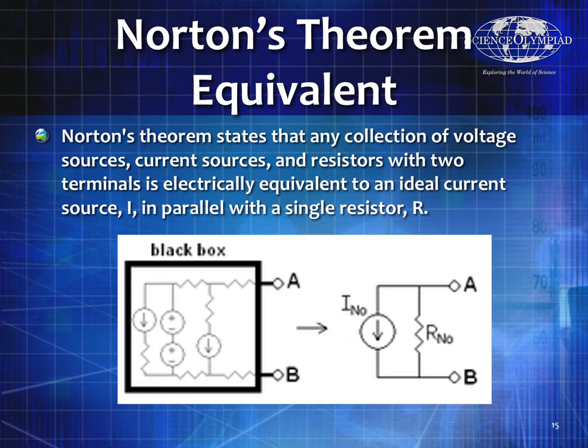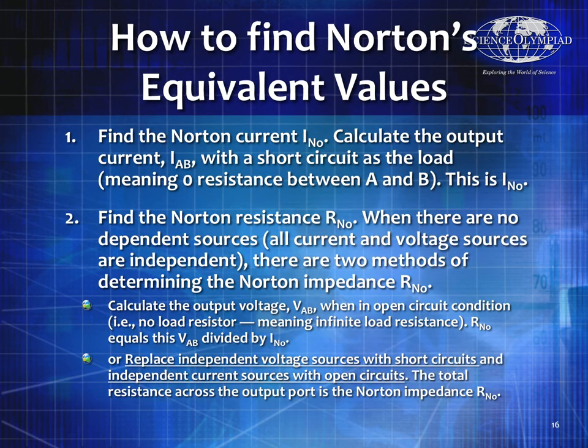Norton's theorem states that any collection of voltage sources, current sources, and resistors with two terminals is electrically equivalent to an ideal current source in parallel with a single resistor — giving I_Norton and R_Norton. To find them: calculate the output current when a short circuit is placed across A and B — that is your Norton current. Find R_Norton the same way as R_Thevenin: replace independent voltage sources with short circuits and independent current sources with open circuits, then find the equivalent resistance. Alternatively, find the open-circuit voltage and divide V_AB by I_Norton.